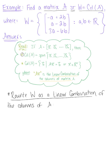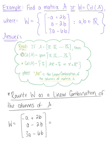So we want to rewrite this set W as a linear combination of the columns of matrix A. We were given set W is minus A plus 2B, we then have A minus 2B and 3A minus 6B. And so we have two variables here, we have A and B.